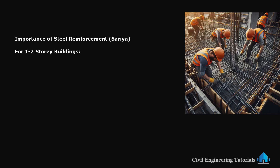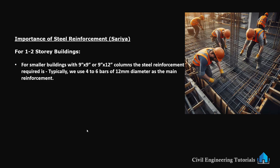For 1 to 2 storey buildings with 9 inch by 9 inch or 9 inch by 12 inch columns, the steel reinforcement required is moderate. Typically we use 4 to 6 bars of 12 mm diameter as the main reinforcement. For example, in a 9 inch by 9 inch column for a 2 storey house, we can use 4 bars of 12 mm steel. Along with the main bars, we use stirrups — small steel hooks placed at regular intervals to hold the main bars in position.